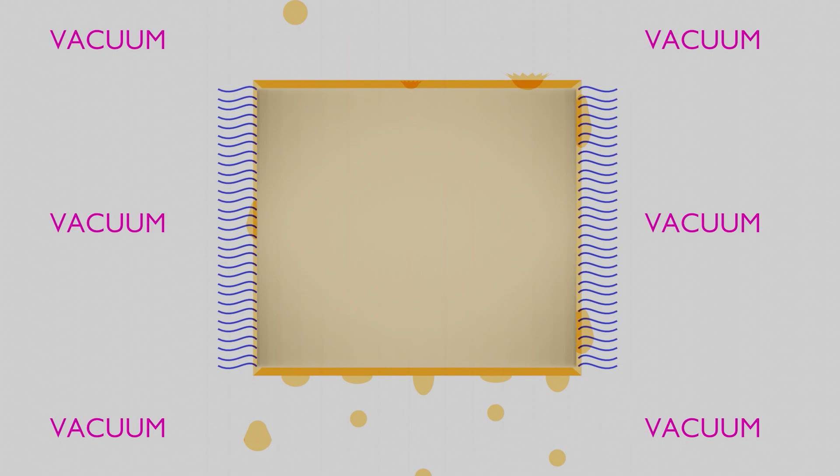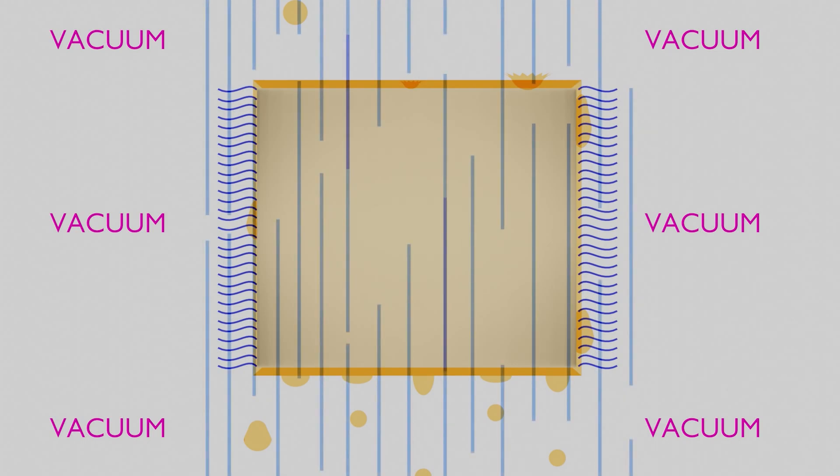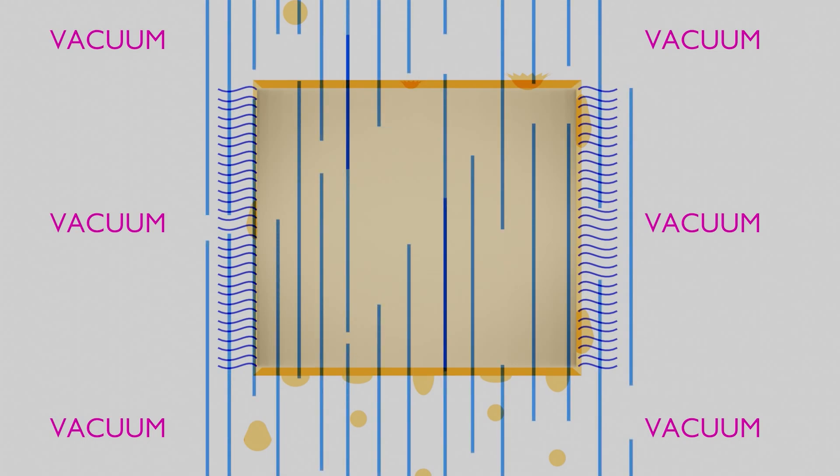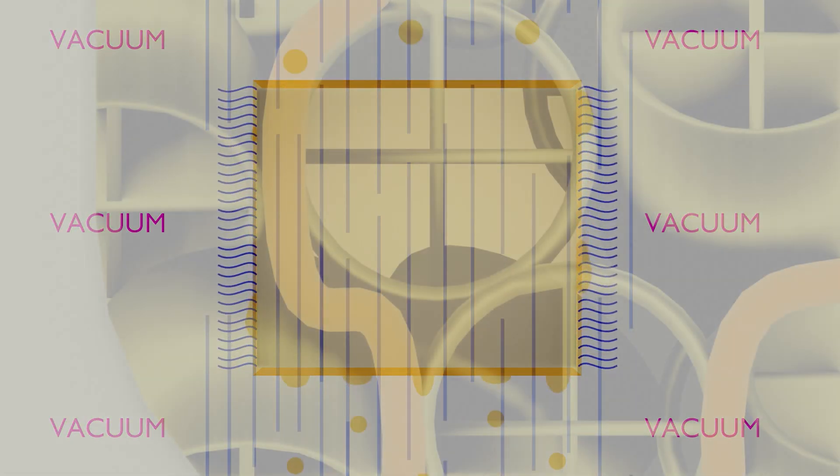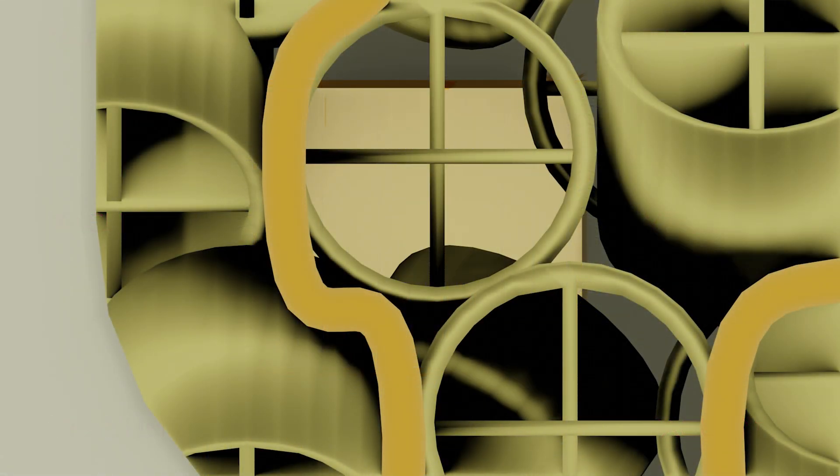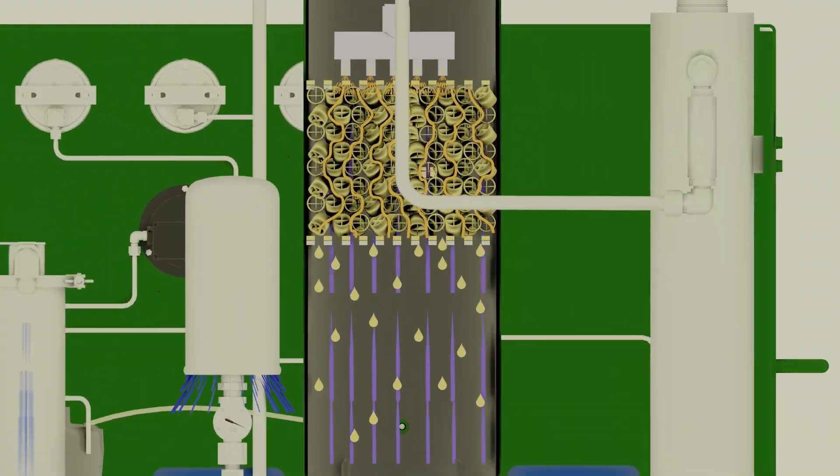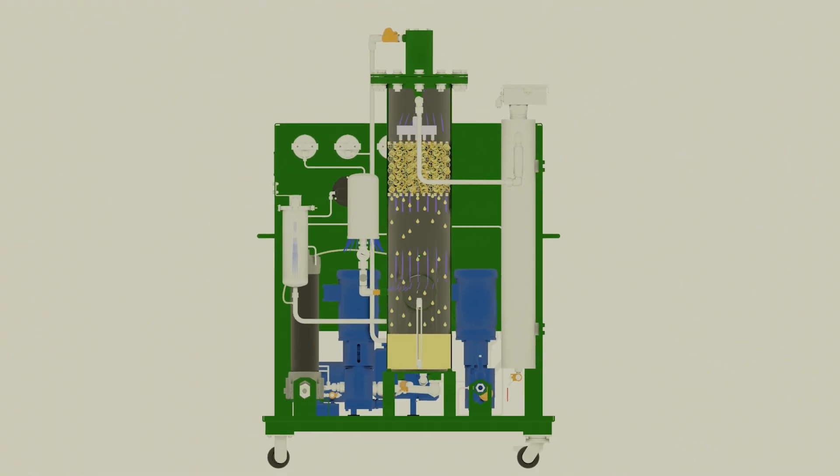Once water dehydrates out of the oil, it is absorbed by the dry sweep air being pulled through the vacuum tower, while oil remains in the vacuum tower due to its higher evaporation temperature than water. Once water vapor is extracted by the dry sweep air, it is expelled to atmosphere by the vacuum pump.